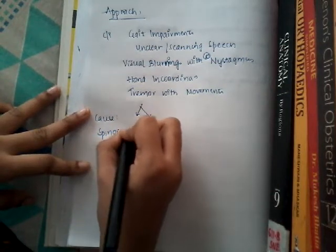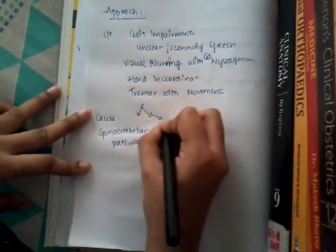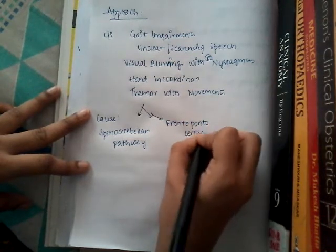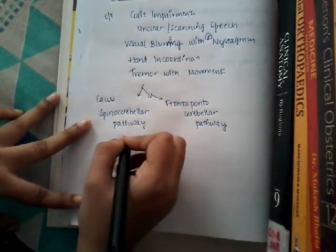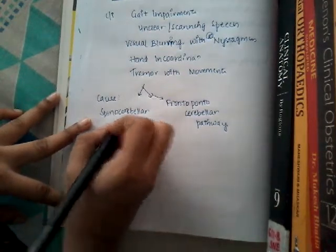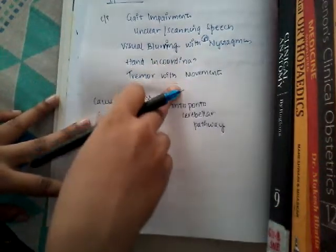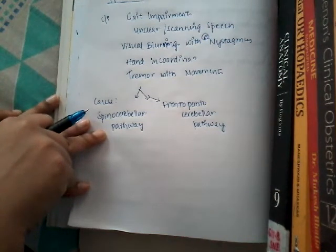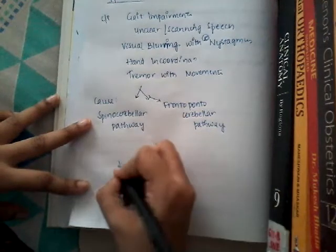These features generally result from the involvement of the cerebellum. There are two pathways involved: the spinocerebellar pathway or the frontopontocerebellar pathway. A defect in these pathways causes ataxic disorders. This is true cerebellar ataxia. However, there is one more ataxia associated with labyrinthine disease, called labyrinthine ataxia.